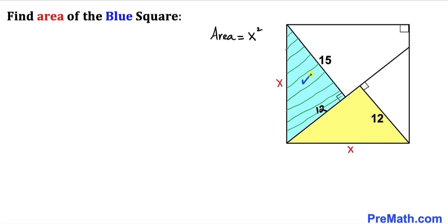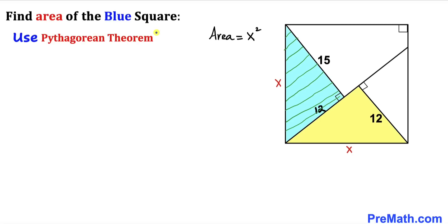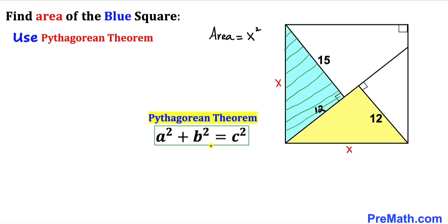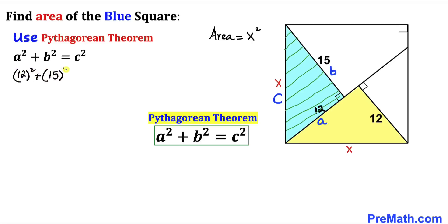Now let's focus on this blue triangle. We know that this is a right triangle, so we are going to use the Pythagorean theorem: a squared plus b squared equals c squared. Let me call the longest leg c, this side a, and this side b. Filling in the formula: a in our case is 12, b in our case is 15, and c in our case is x, so this gives us 12 squared plus 15 squared equals x squared.